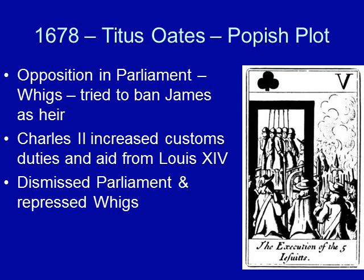Charles II increases customs duties and gets aid from Louis XIV so that he can dismiss Parliament. Once he dismisses Parliament, he represses the Whigs — putting many of them in prison and executing some for treason.